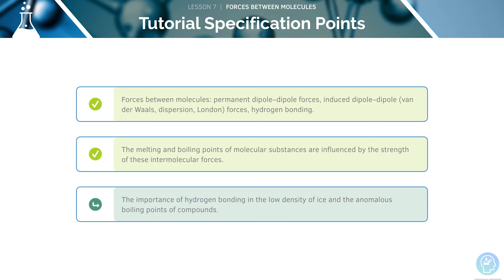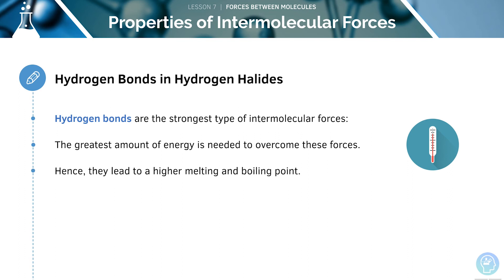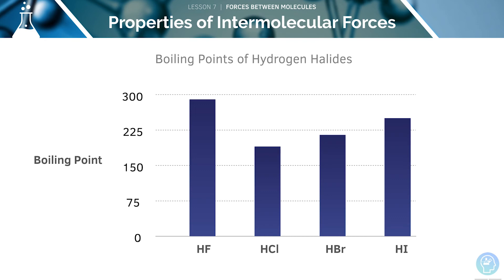Let's move on to our final specification point, covering the importance of hydrogen bonding. Hydrogen bonding is the strongest type of intermolecular force, requiring the largest amount of energy to overcome, which leads to higher melting and boiling points. This figure shows that the boiling point of hydrogen fluoride is a lot higher than the boiling points of the other hydrogen halides, due to the presence of hydrogen bonding. The boiling point increases from hydrogen chloride to hydrogen iodide because the London forces are getting larger with the bigger size of the molecule.